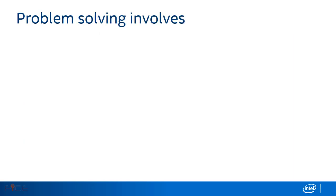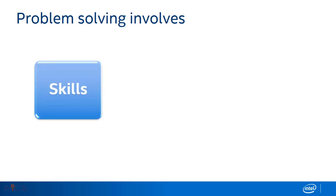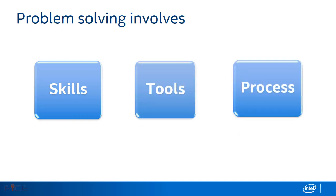Problem solving is a skill, a tool, and a process. It is a skill because once you have learned it, you can use it repeatedly, similar to the ability to ride a bicycle, add numbers, or speak a language. It is a tool because it can help you solve an immediate problem or achieve a goal. Likewise, it is also a process because it involves taking a number of steps.